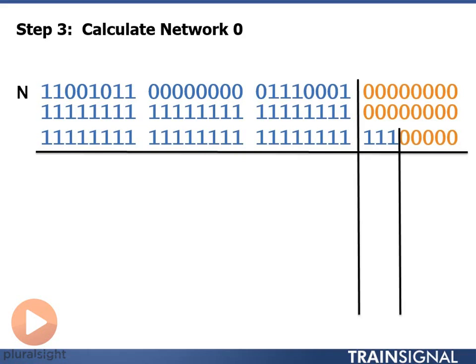The setup of the problem here is critical, because what it shows us is the bits of the address that we cannot modify, the first 24, it shows us the bits that we can modify, and it shows us the portion of the address that is our new network portion, where we can change the network number that we're calculating.